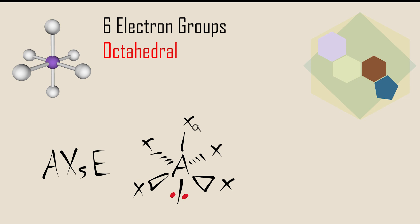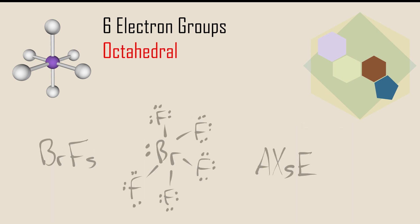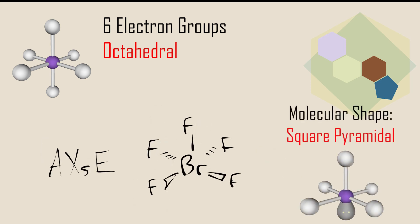Five bonded atoms and one lone pair define the square pyramidal shape. Bromine pentafluoride has an AX5E designation and therefore a square pyramidal molecular shape. Do not forget to draw the Lewis structure before assigning the AXE designation, as the molecular formula alone does not indicate whether there are lone pairs on the central atom.